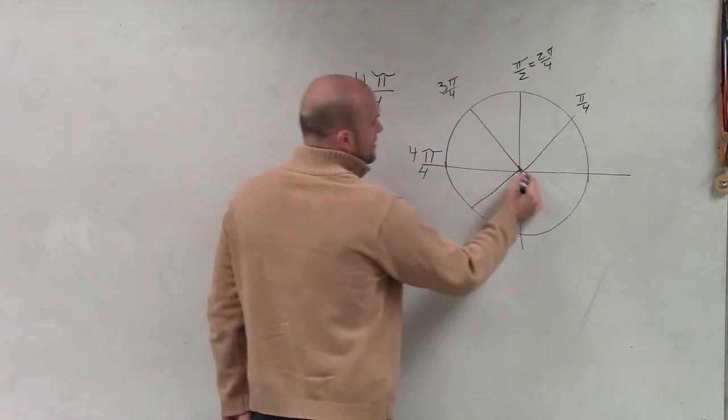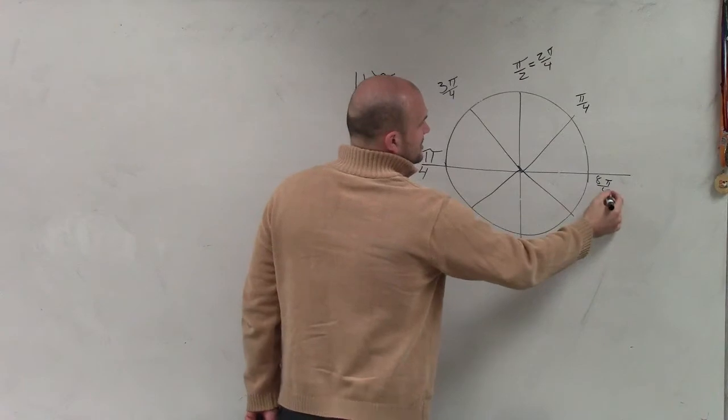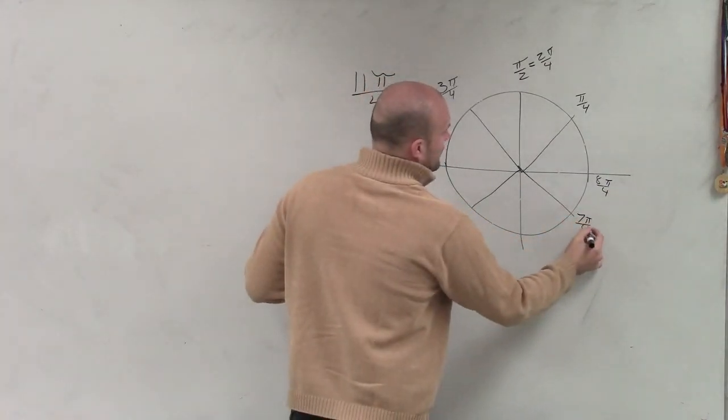Then we'll just continue this: 5π, 6π, 7π, 8π. You guys need me to add these all the way around? 7π/4.